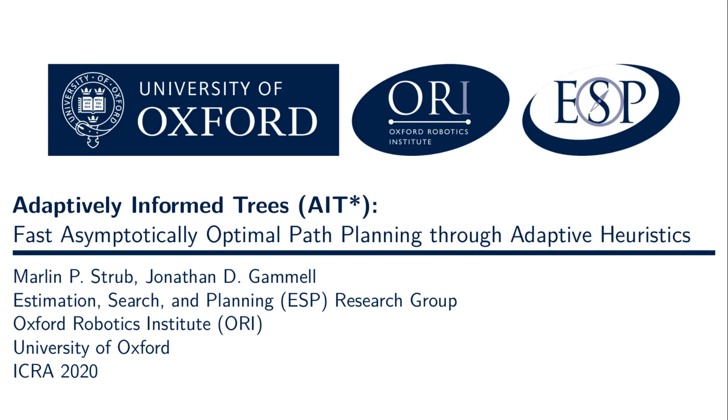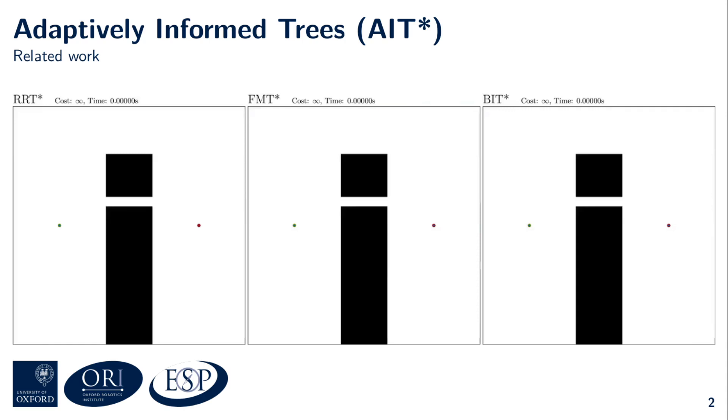Let me put AIT* in context by showing you how state-of-the-art planning algorithms find collision-free paths on this illustrative toy problem. The following time-synchronized video shows RRT* on the left, FMT* in the middle, and BIT* on the right.